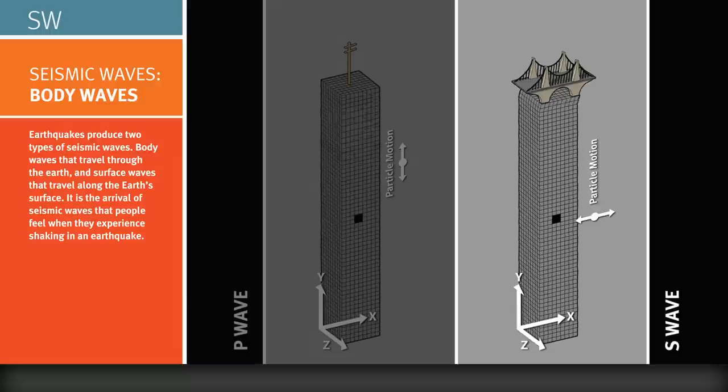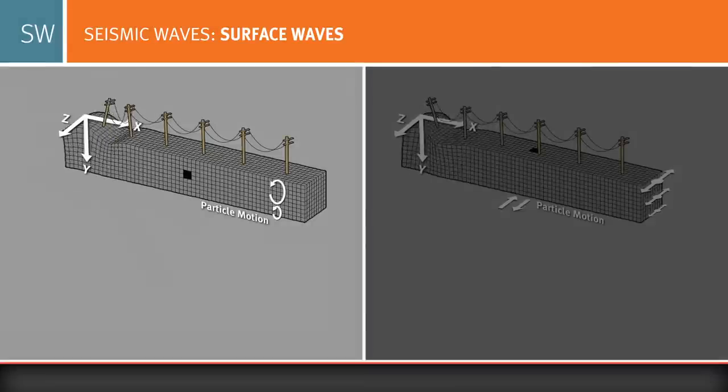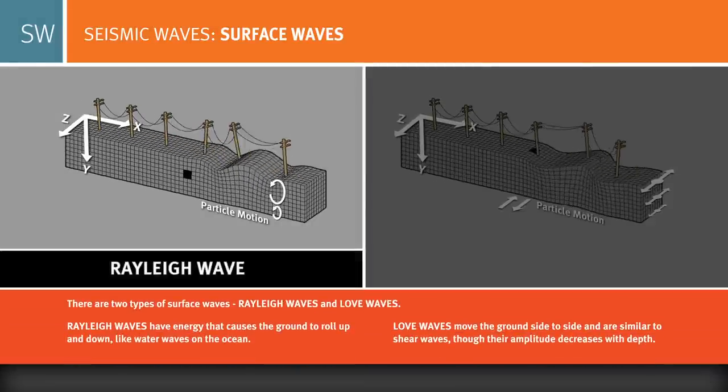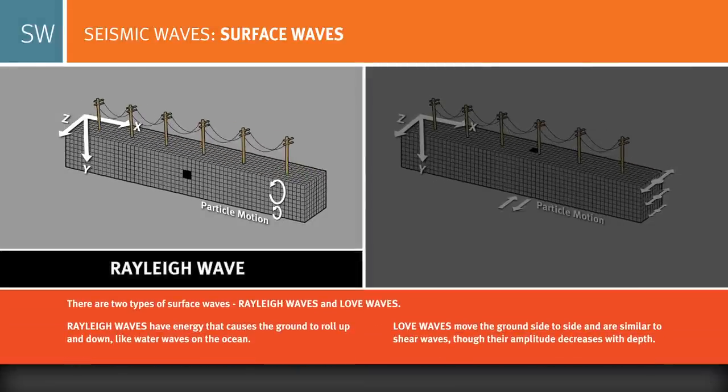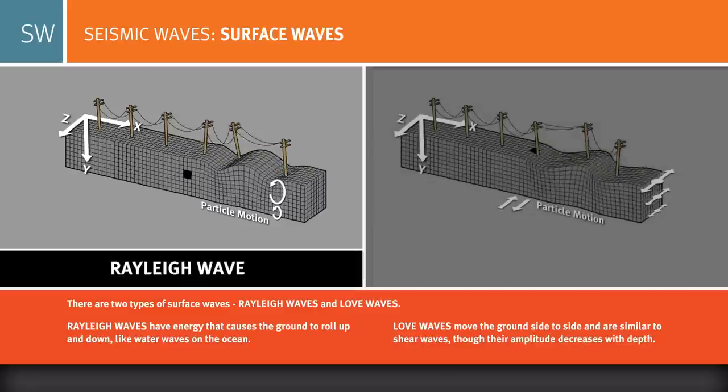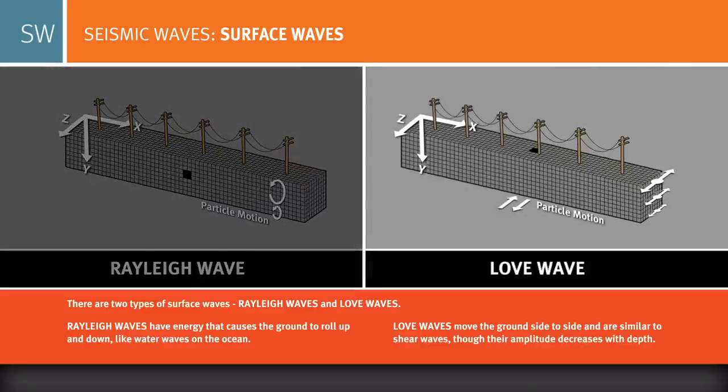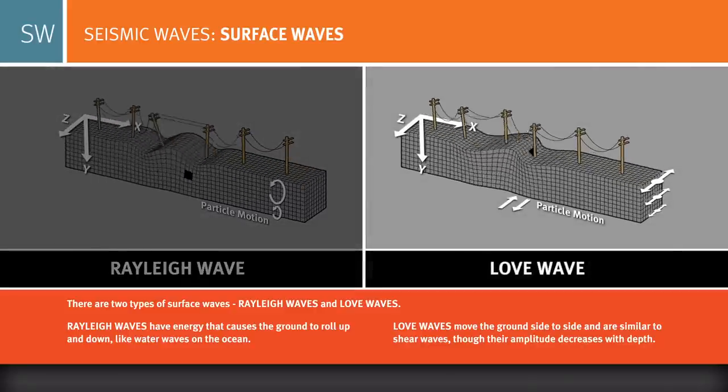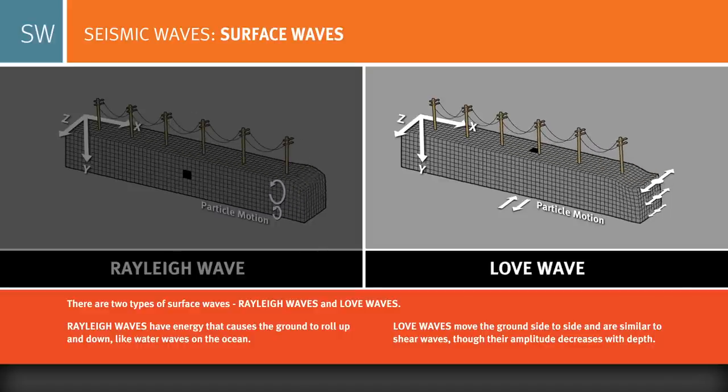There are likewise two kinds of surface waves. Rayleigh waves have energy that causes the ground to roll up and down, like water waves on the ocean. Love waves move the ground from side to side, and are similar to shear waves, but can have larger amplitudes.